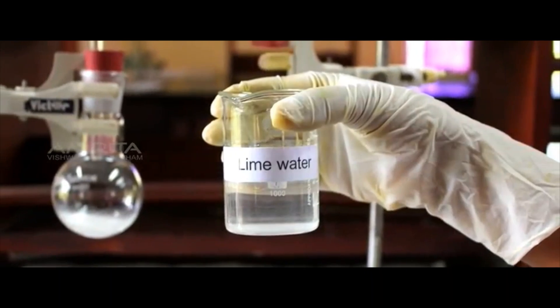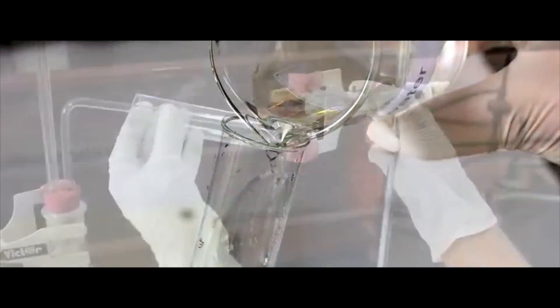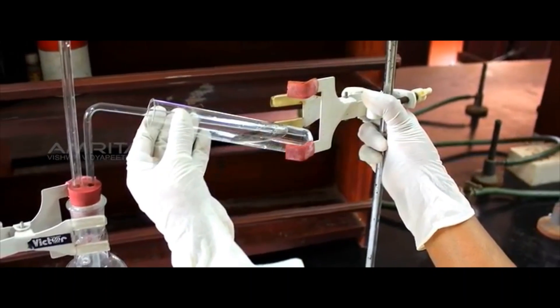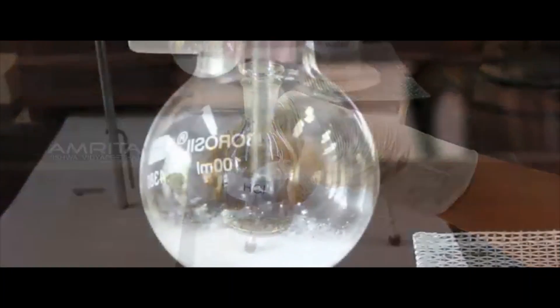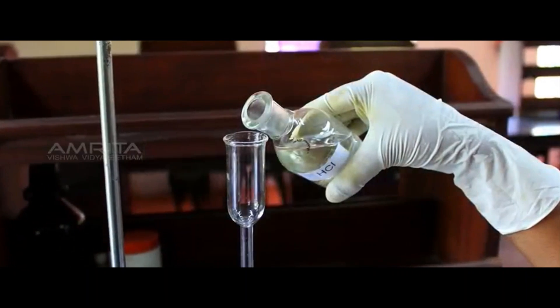Now pour a small quantity of lime water into the boiling tube and clamp it with another stand. Then add HCl to the sodium carbonate solution in the flask using the thistle funnel.